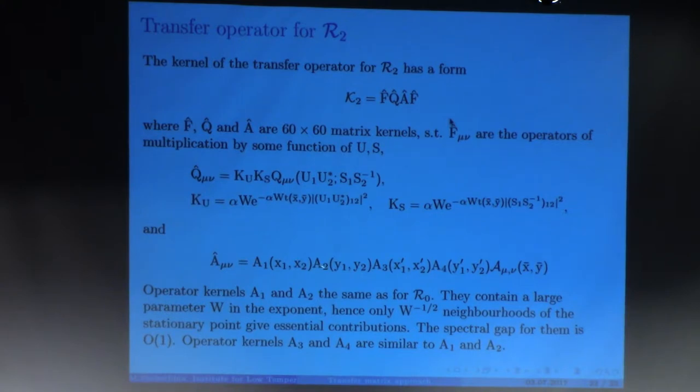And as for A we have a lot of variables here. You have at least four space variables. But A are some kernels again, some kernels which have large w in the exponent. So they give you concentration about some point. And now the spectral analysis is much more involved, mainly because of the structure.